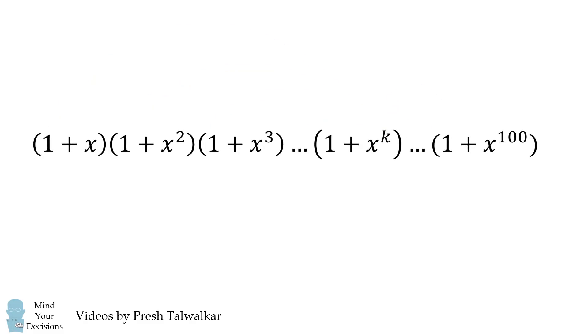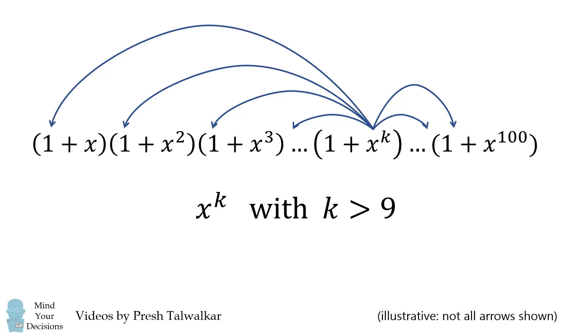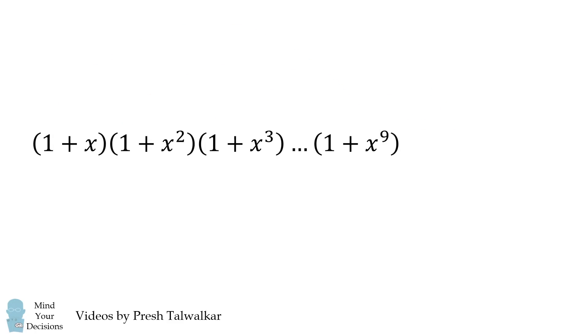Similarly, if we have 1 plus x to the power of k where k is greater than 9, if we multiply this by all of the 1 terms in all of the other binomials, we'll end up with a term that is an exponent that's larger than x to the power of 9.